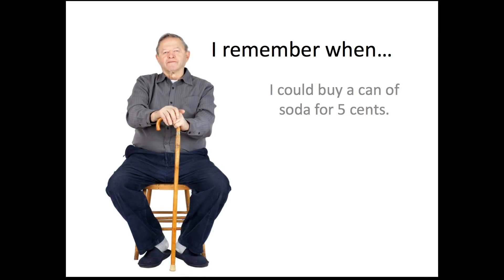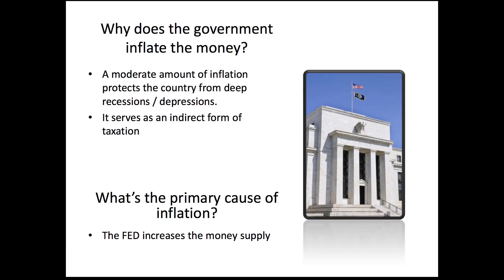I'm sure everyone can remember when they sat down with their grandfather and he said that he could buy a can of soda for 5 cents. That's what we're talking about when we talk about inflation. The Federal Reserve will tell you that they inflate the money because it allows them to protect the country from deep recessions or depressions. But another reason is that it serves as an indirect form of taxation. The main thing to understand is that inflation occurs because the federal government increases the supply of money.